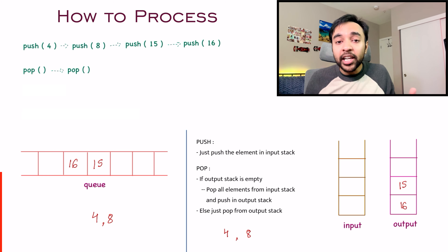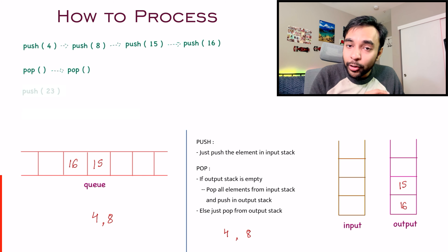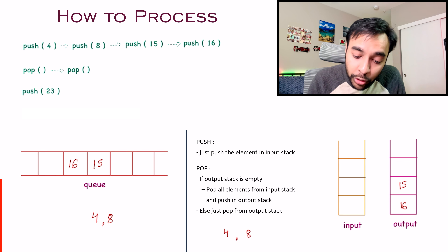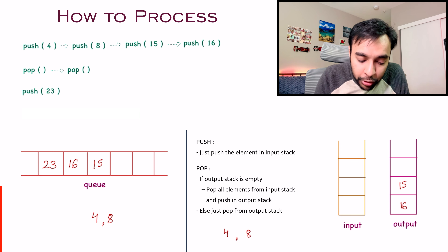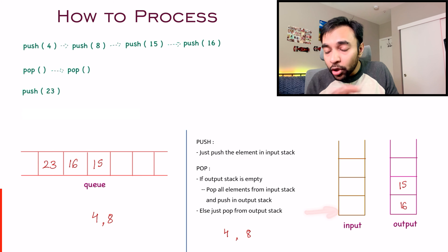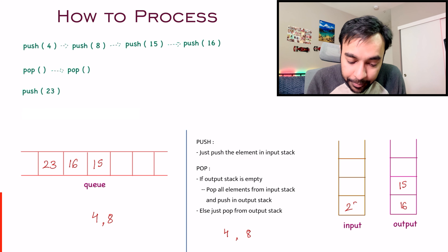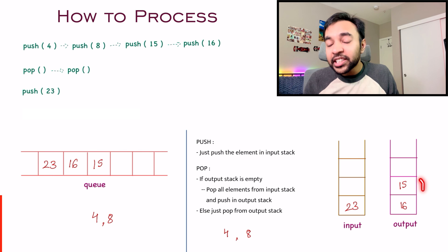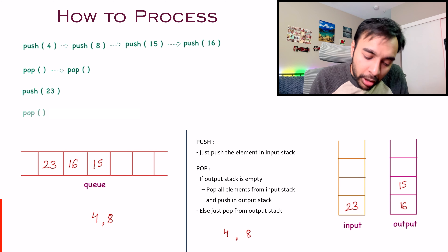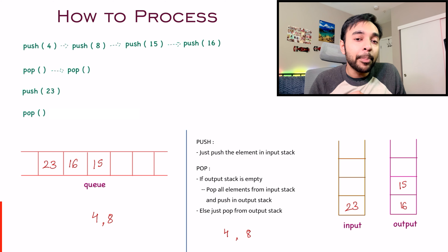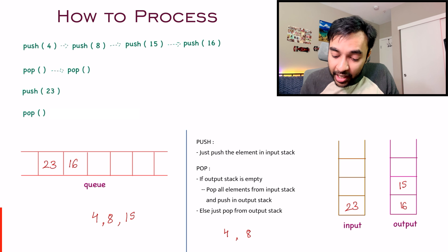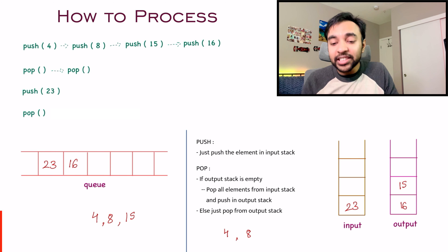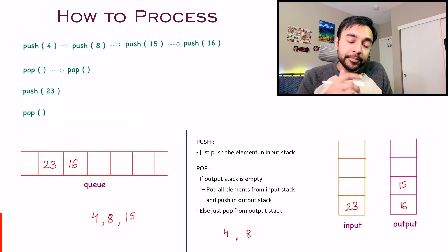You might be wondering why we had to pop out all the elements and what happens to the input stack. The next operation I have is push 23. In my standard queue, 23 gets added. And as per the rules, whenever you get a push operation just add the element to the input stack — so 23 gets added there. Now both stacks have some elements. Let us try one more pop operation. In the standard queue, 15 will get popped out. And in our stacks, my output stack is not empty, so we just look at the output stack and pop an element — we get 15. We are able to mimic the entire functionality of a queue.